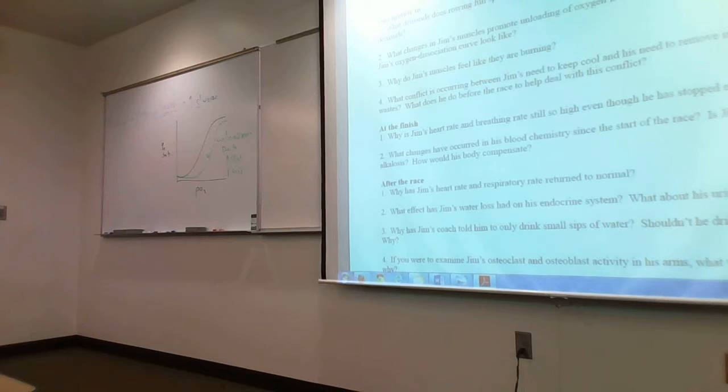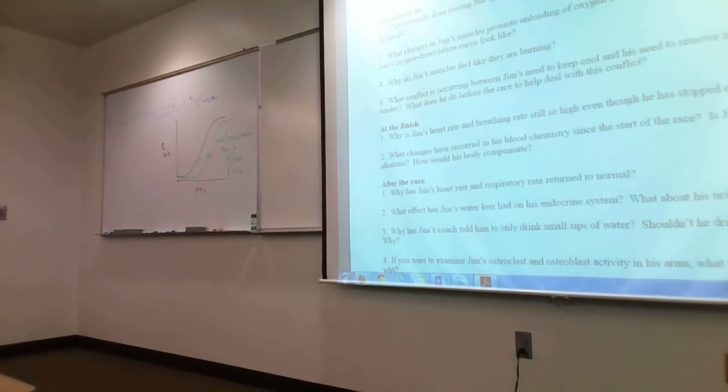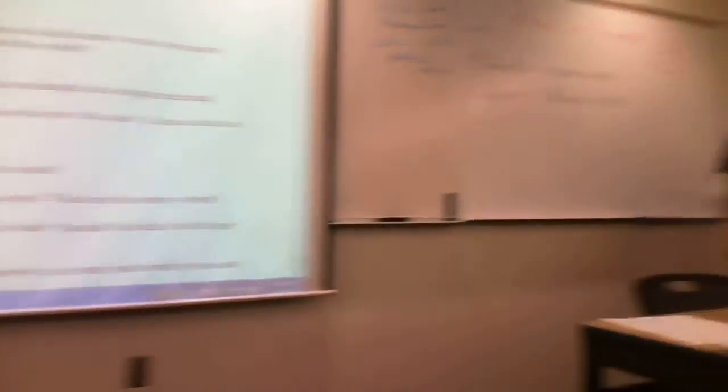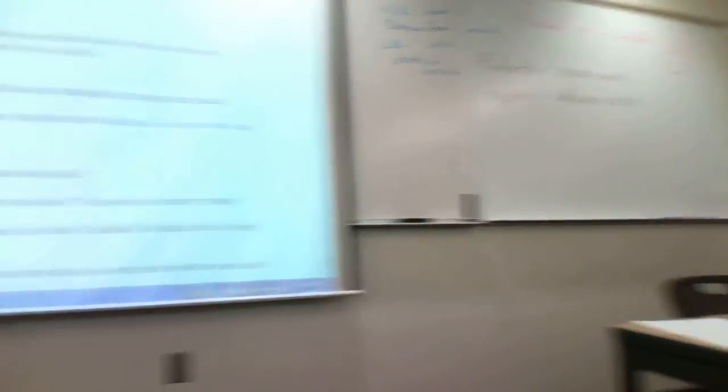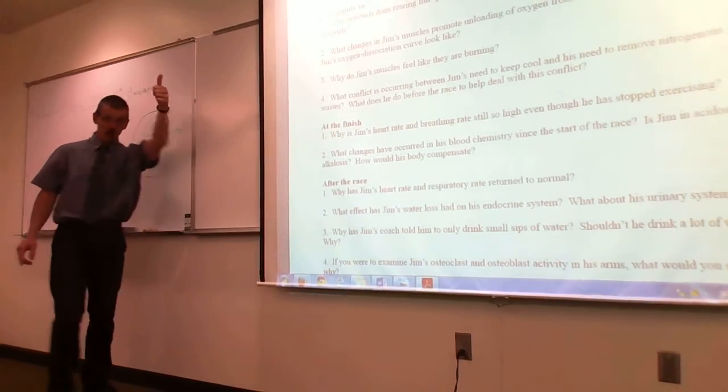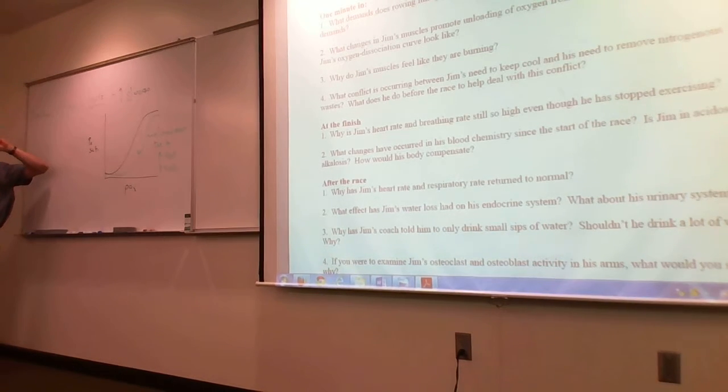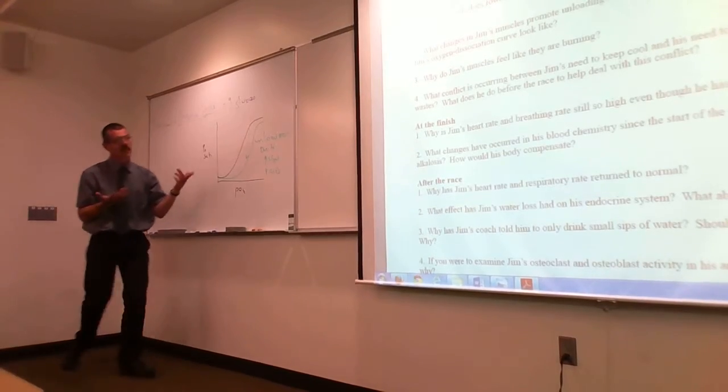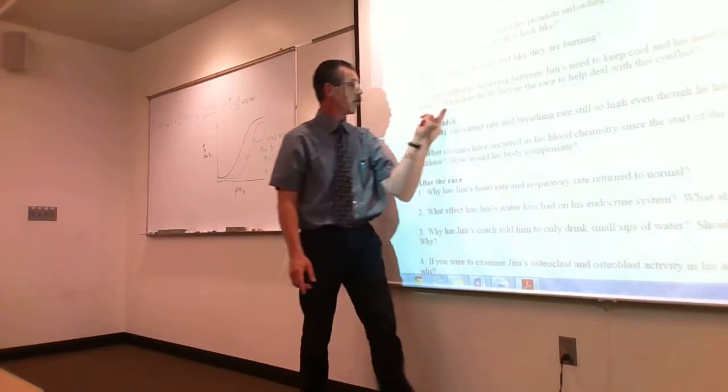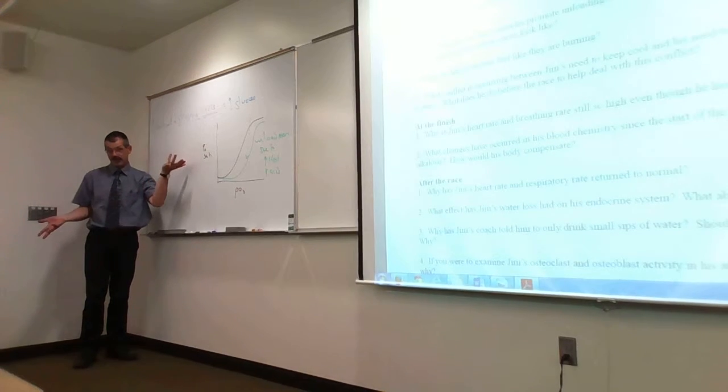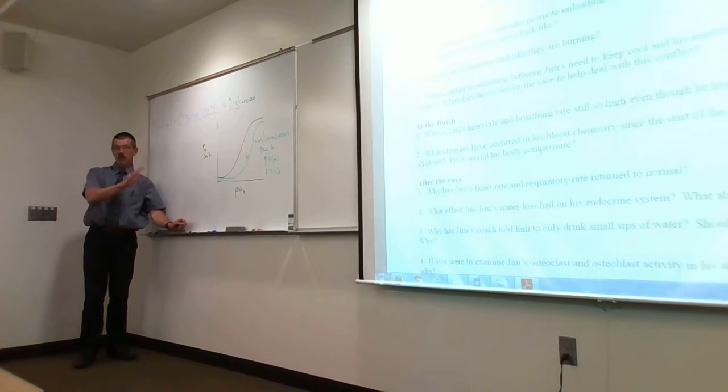Unload more due to more heat, more acid. When my body's getting hot and acidic, I'm going to shift the graph to the right and unload more from my blood to my body. More CO2 and acid. Why are his muscles sore? That's the acid, that's the anaerobic respiration, lactic acid buildup. He's really getting hot. So, he has to keep cool. How does he remove all this waste, though? Sweating keeps him cool. How do you do waste? Pee. So, sweat takes water. Pee takes water. Which water do you want to use? Sweat.